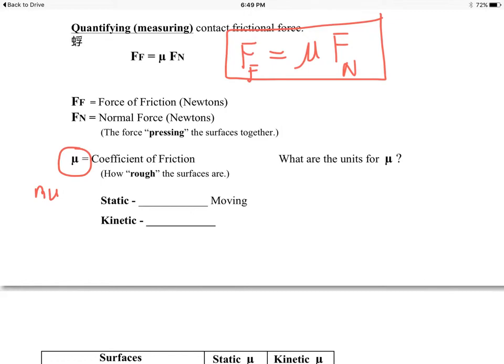What are the units for mu? If you look at the equation above and solve it for mu, you would get mu equals the force of friction, F sub F, over F sub N. The units would be newtons over newtons. So the units cancel out. Mu is one of those rare quantities that has no units.